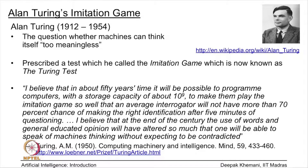Turing predicted that with a storage capacity of 10^9, machines could be made to play the imitation game so well that an average interrogator would not have more than a 70 percent chance of making the right identification after 5 minutes of questioning. And he believed that by the end of the century, use of words and general educated opinion would be altered so much that one would be able to speak of machines thinking without expecting to be contradicted.